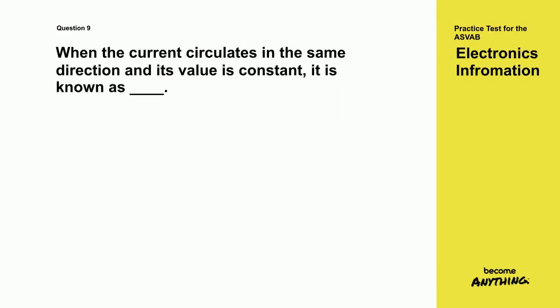Question 9. When the current circulates in the same direction, and its value is constant, it is known as what?